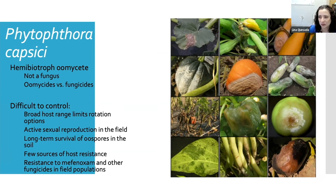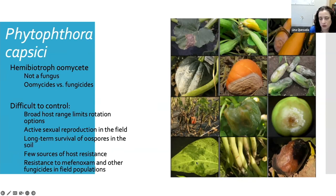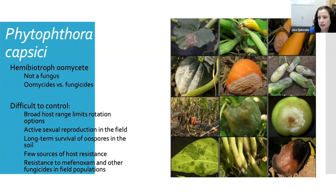Here are some images of Phytophthora capsici symptoms in cucurbits. In watermelon specifically, we typically see fruit symptoms — a white powdery or sugar-like covering on the fruit. Watermelon vines can be wilted by Phytophthora capsici, but that's rare; we see wilting symptoms more in squash, pumpkins, and peppers. In cucumber and watermelon it's more the fruit symptoms, as the vines tend to do a little better with this pathogen compared to squash and pumpkins.